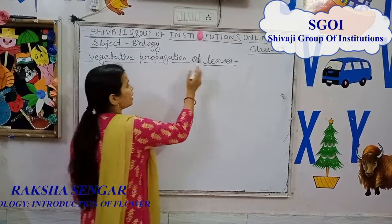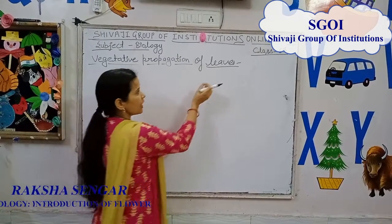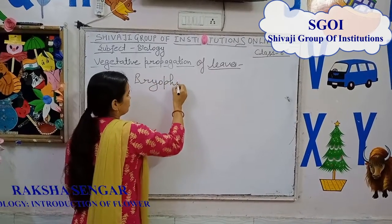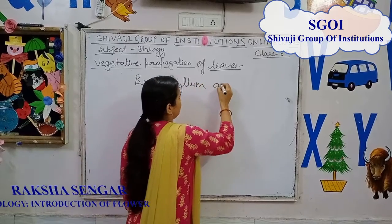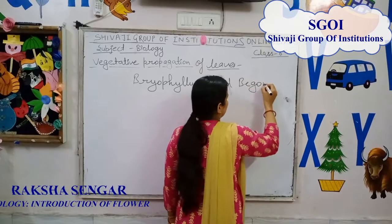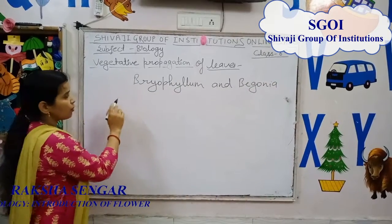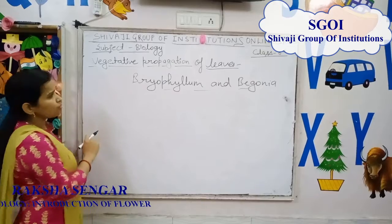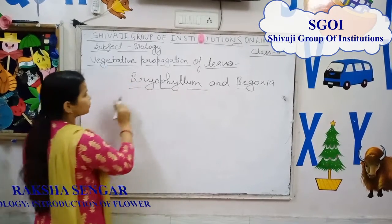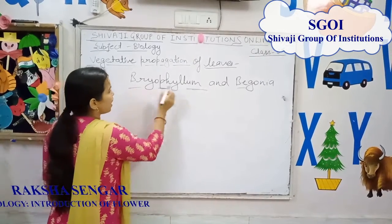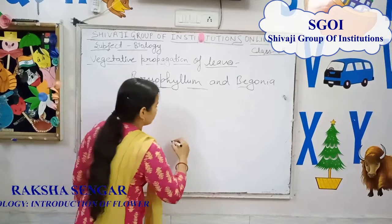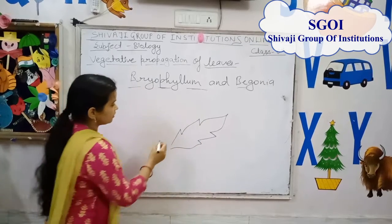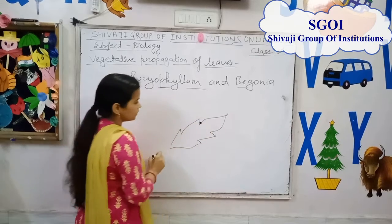Now, vegetative propagation by leaves. How does vegetative propagation occur by the help of leaves? In some plants like bryophyllum and begonia, the buds are present at the notches or the margins of the leaves.